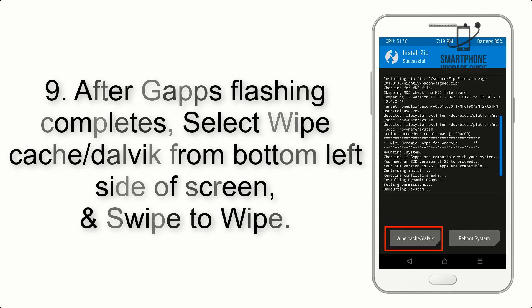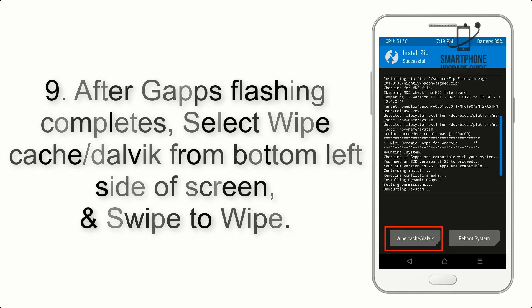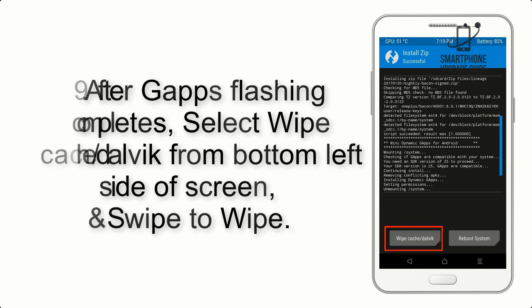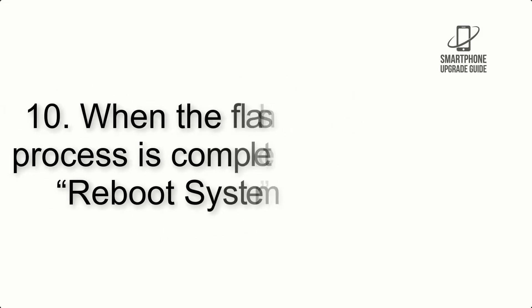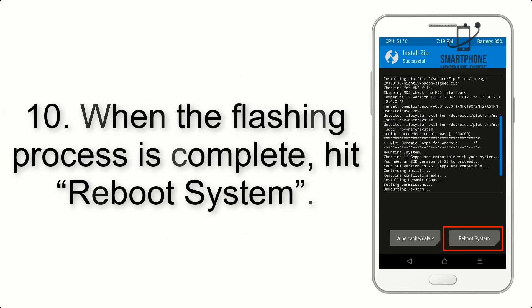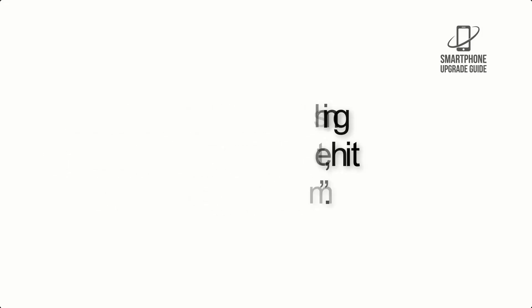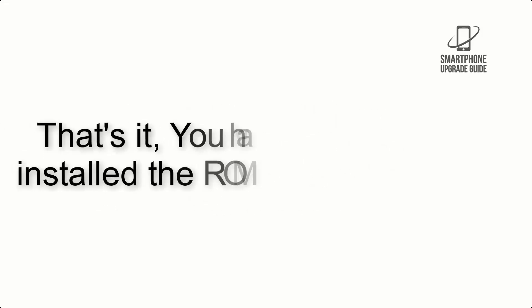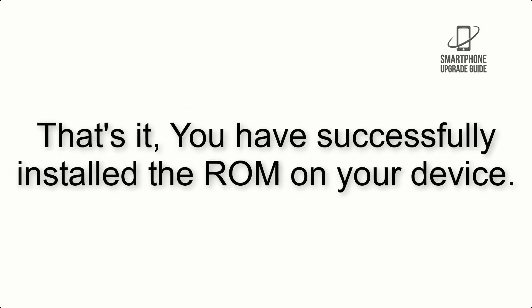Step 9: After GApps flashing completes, select Wipe Cache and Dalvik from the bottom left side of the screen and swipe to wipe. Step 10: When the flashing process is complete, hit Reboot System. That's it — you have successfully installed the ROM on your device.